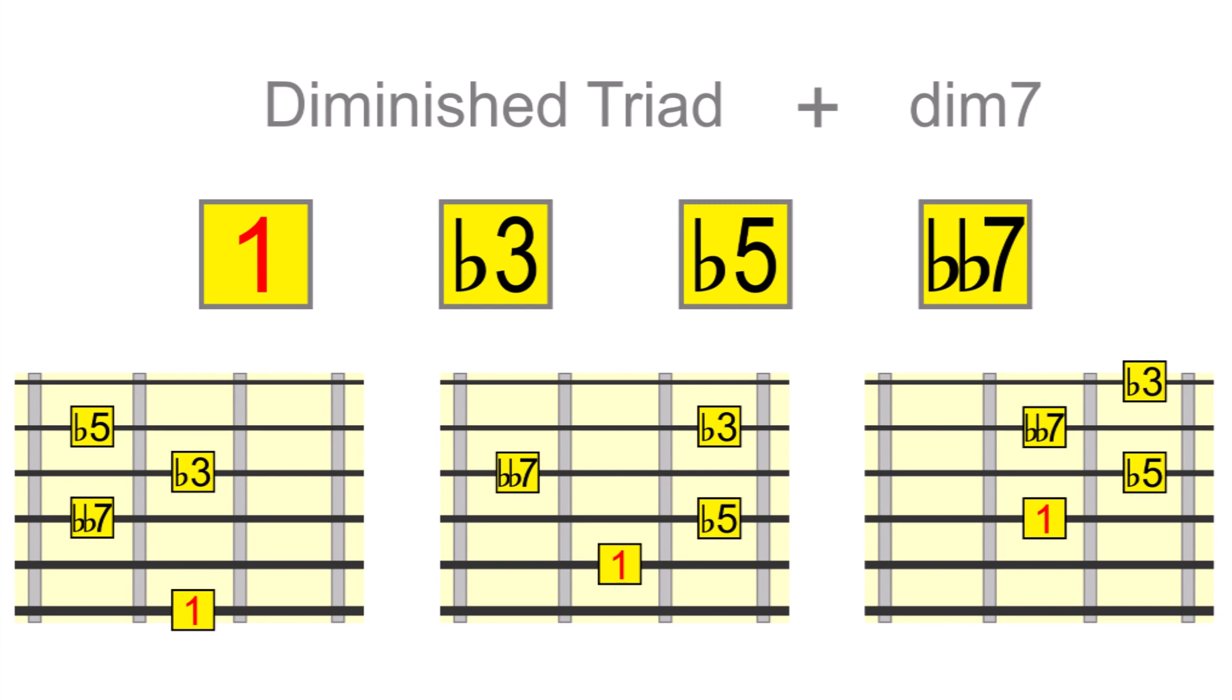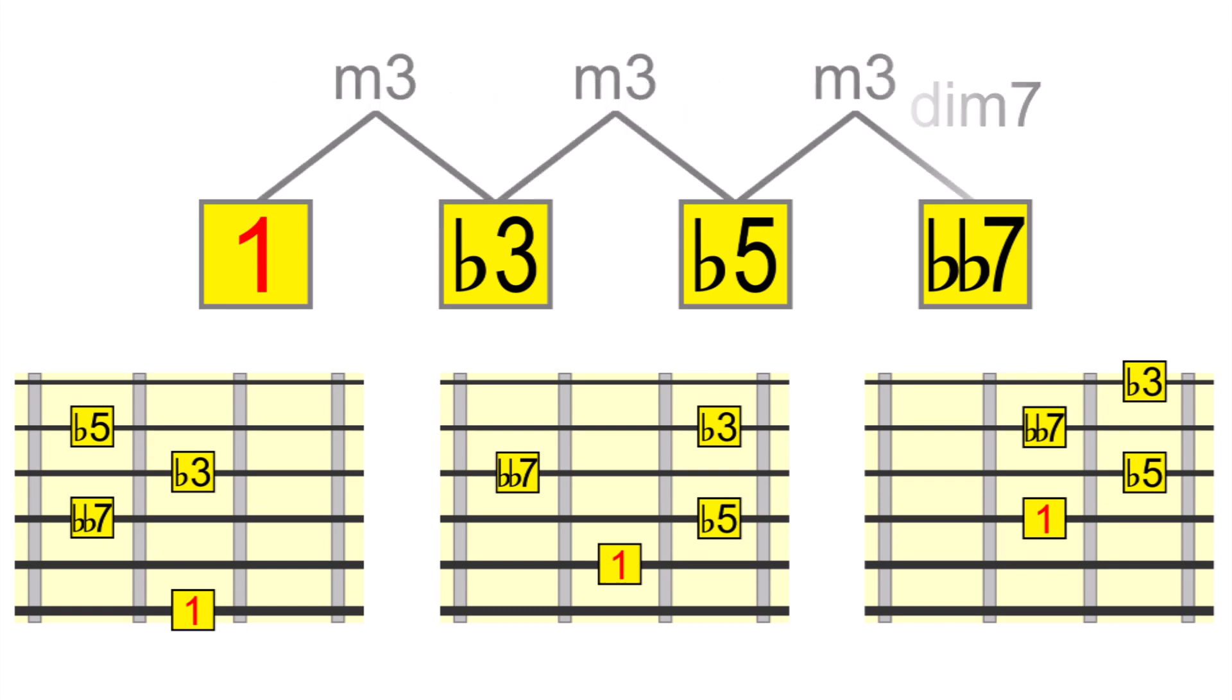This crucial Diminished 7th interval is confusingly labelled as a double b7. I don't want to get too much into the theory behind why we use a double b, and you can read up on it, but in short, it's to do with how the intervals of this unique 7th chord are stacked in minor 3rds. Don't be put off learning about these chords due to theoretical anomalies like double flat. It's the sound and function of these chords that truly matters, and that's what we're going to explore.